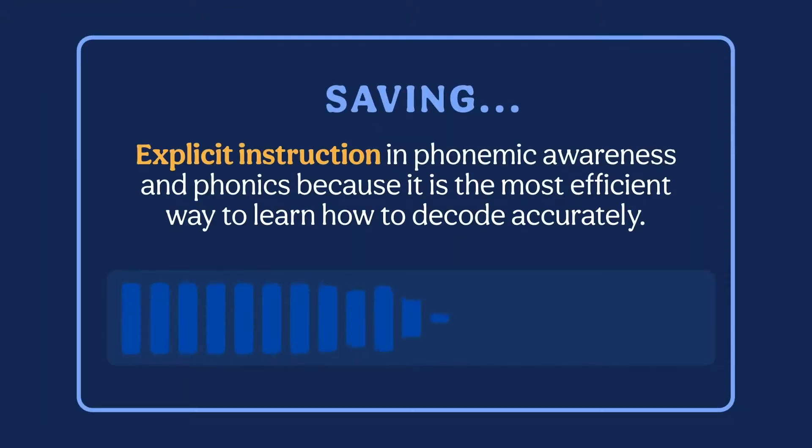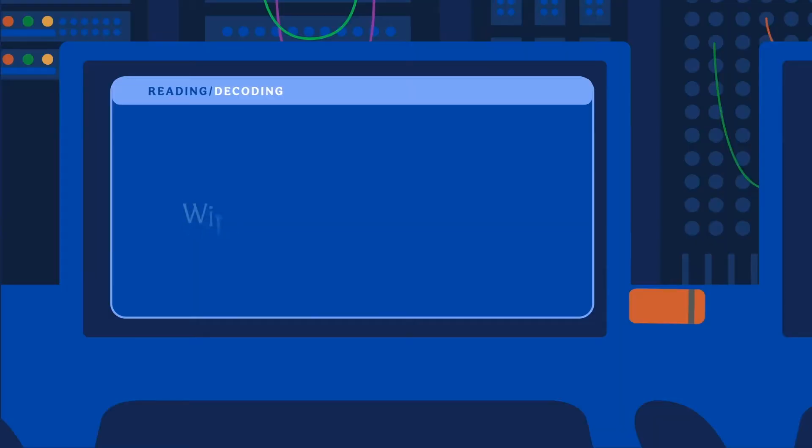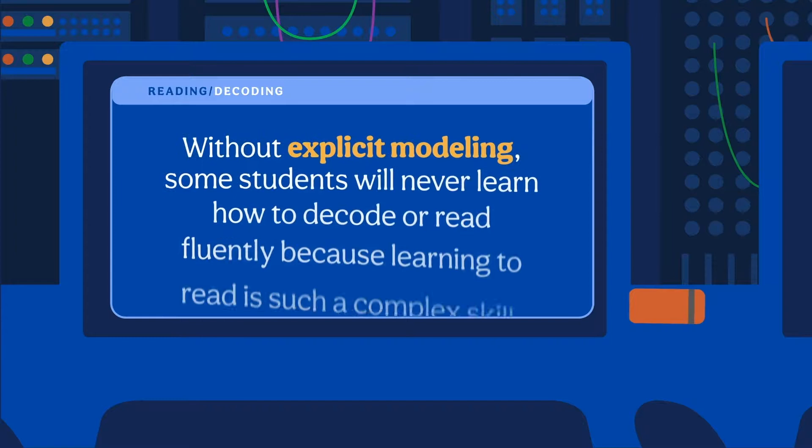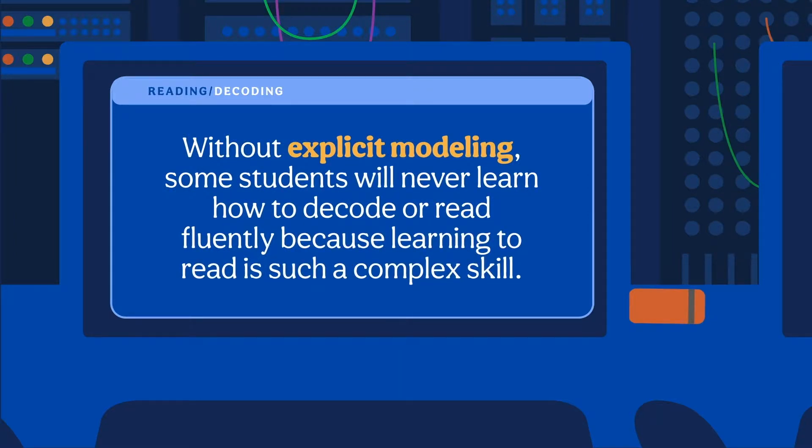Students need explicit instruction in phonemic awareness and phonics because it's the most efficient way to learn to decode accurately. Without explicit modeling, some students will never learn how to decode or read fluently, because learning to read is such a complex skill.